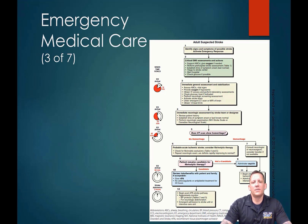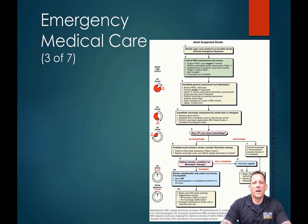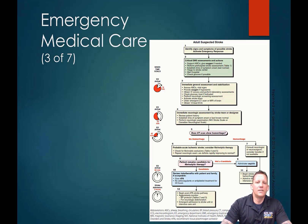Here's the suspected stroke algorithm: is the patient altered? Run through AEIOU-TIPS. If it looks like an obvious stroke, do the Cincinnati Stroke Scale, then the LAMS score, then early notification. At the ED, the patient will be taken to CT scan to determine: is this a bleed or an ischemic stroke? That matters because tPA, a clot buster, is not given to somebody with a hemorrhagic stroke — they're already bleeding into their brain and we don't want to make that worse.